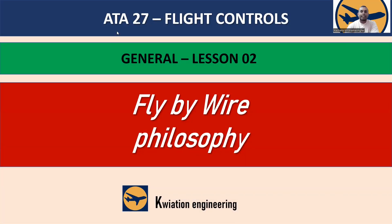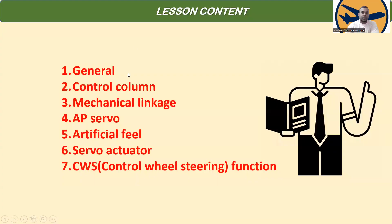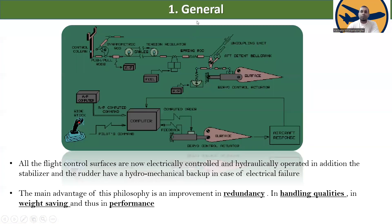This is lesson ATA Chapter 27 Flight Controls, general lesson number two: Fly by Wire Philosophy. The lesson content covers: general introduction, the control column and mechanical linkage, autopilot servo, artificial feel servo actuator, and CWS — control wheel steering function.